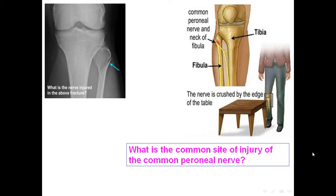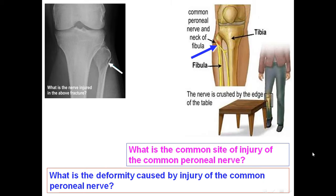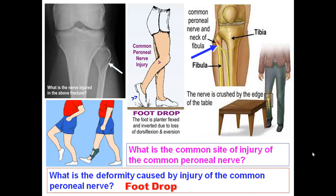The commonest site of injury of the common peroneal nerve is the lateral side of the neck of the fibula. That is why a fracture of the neck of the fibula might injure the common peroneal nerve. If injured, the deep peroneal nerve and superficial peroneal nerve are paralyzed, leading to paralysis of the anterior compartment and the lateral compartment of the leg, causing foot drop with the foot inverted due to paralysis of the lateral compartment.